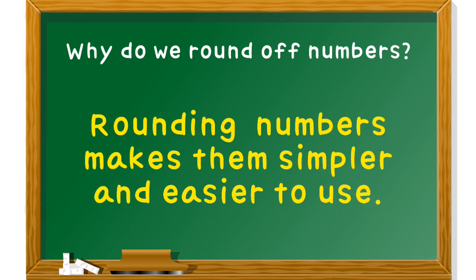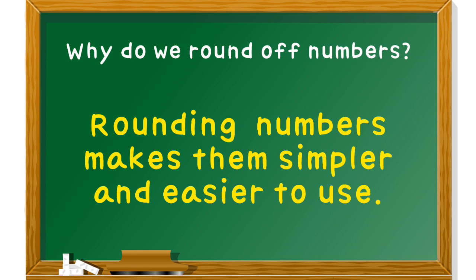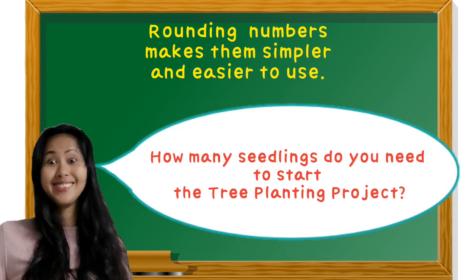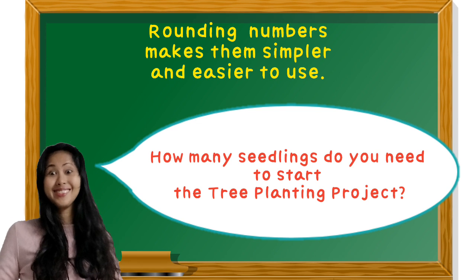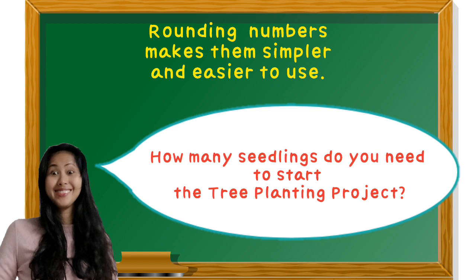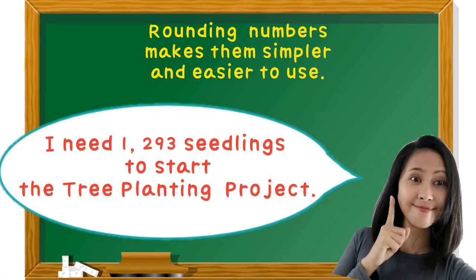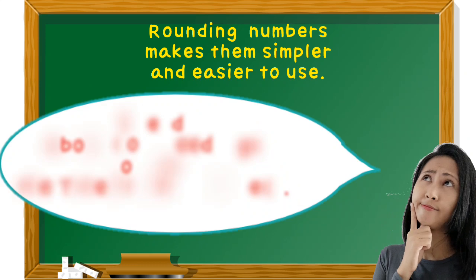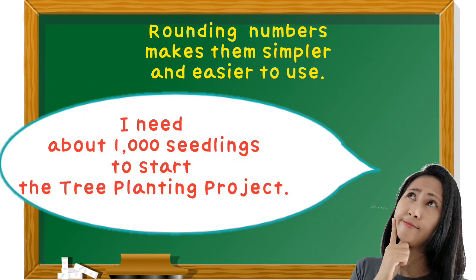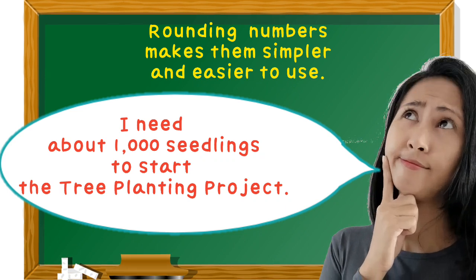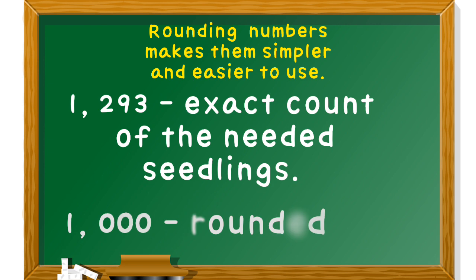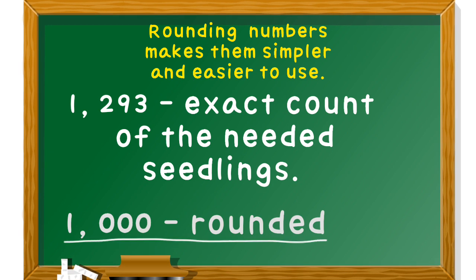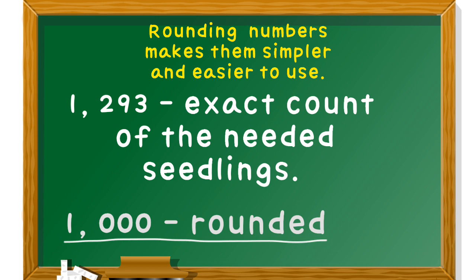Rounding numbers makes them simpler and easier to use. Here's an example: How many seedlings do you need to start a tree planting project? Instead of saying 'I need one thousand two hundred ninety-three seedlings,' you can say 'I need about one thousand seedlings.' We don't need the exact count. Though one thousand is slightly less accurate, its value is still close to one thousand two hundred ninety-three, and it's easier to say.